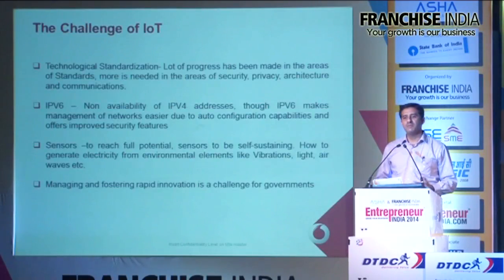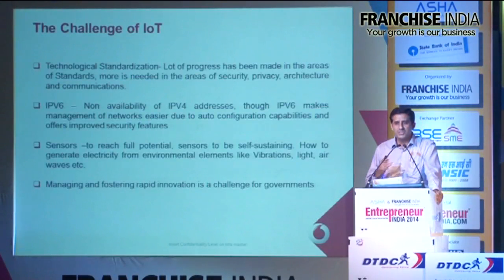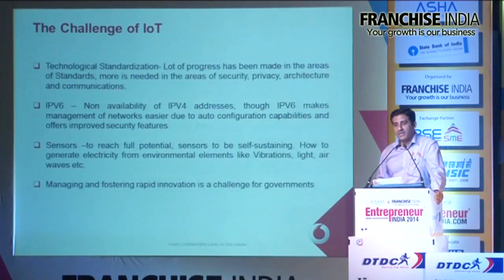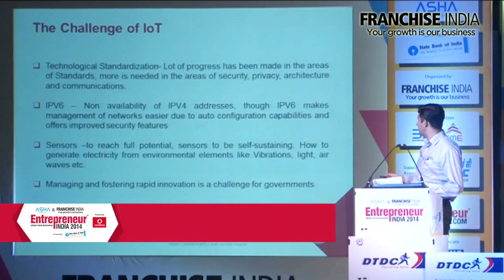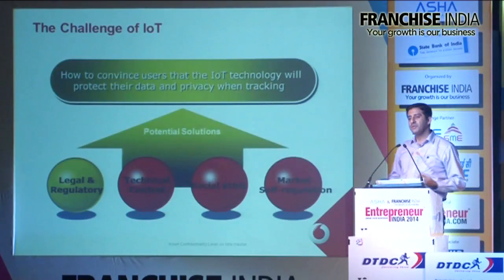There are a lot of challenges. People would have heard of IPv6 - the non-availability of IP addresses is kind of reducing the speed of Internet of Things adoption, though IPv6 is much more advanced and can auto-configure with many security features. Since there are so many devices placed all over the world - in jungles, on roads - they need to be charged and recharged regularly. How to do it? Sensors have to be self-sustaining. How to generate electricity using environmental elements like sound and airwaves is a challenge. Managing and fostering rapid innovation is also a challenge for the government. Of course, how to convince users that Internet of Things technology will protect their data and privacy while tracking is another key concern.